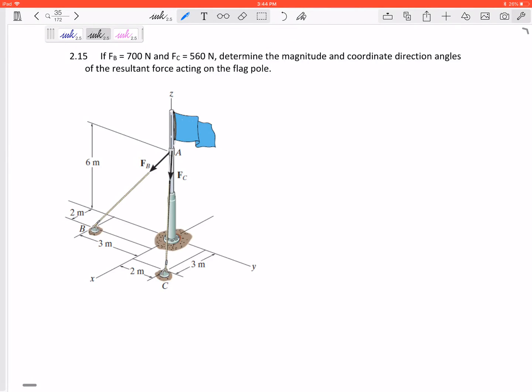Let's look at this problem. I've got two forces: a 700 Newton force in that direction and a 560 Newton force in that direction. I want to determine the magnitude - we'll worry about coordinate direction angles later - but I want to find the resultant force. I want to add those vectors together.